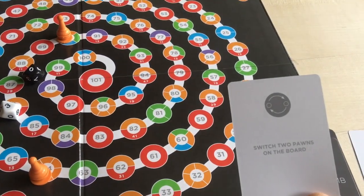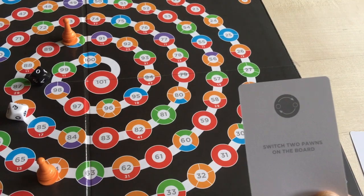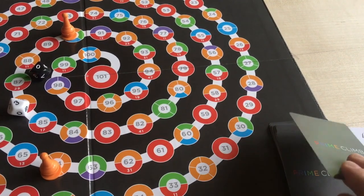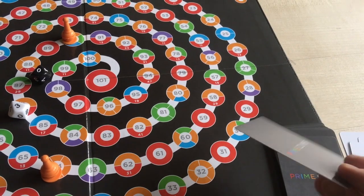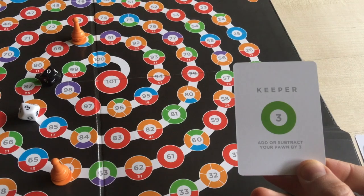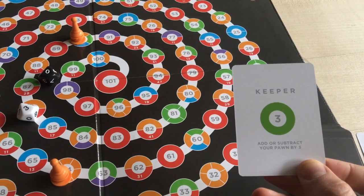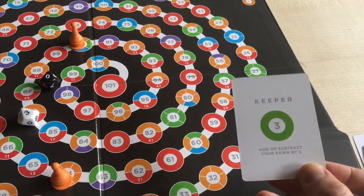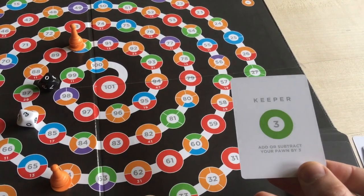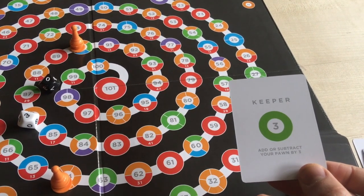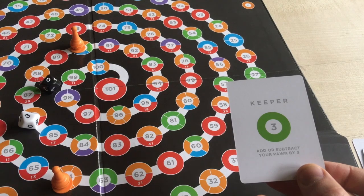There's also cards like switch two pawns on the board. Very powerful. There's also keeper cards. When you take a keeper card, you don't play them on that turn. You actually keep them for a future turn. Then you play them during your roll phase, usually.